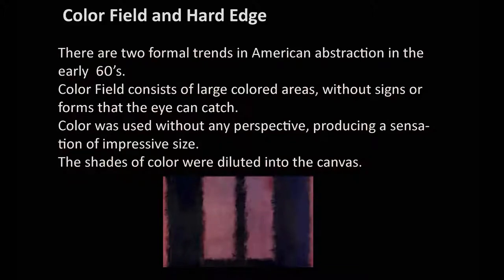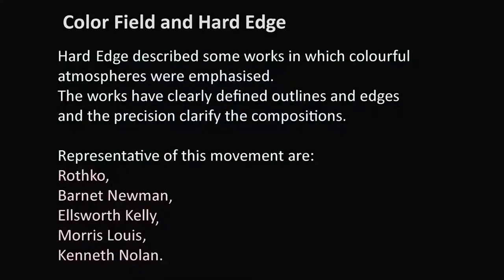There are two formal strands in American abstraction in the early 1960s. The colour field consists of large coloured areas without signs or forms that the eye can easily catch. Colour was used without any perspective, producing a sensation of infinite space, and the shades of colour were diluted into the field. So colour field and hard edge Abstract Expressionist painting presents a very strong presence of colour as an entity by itself — neither perspective nor any representation of anything from the real world.